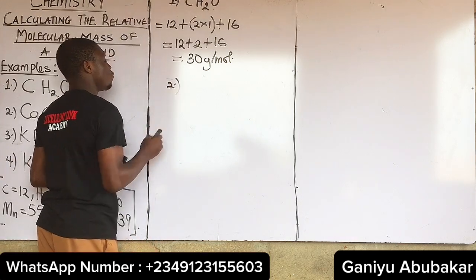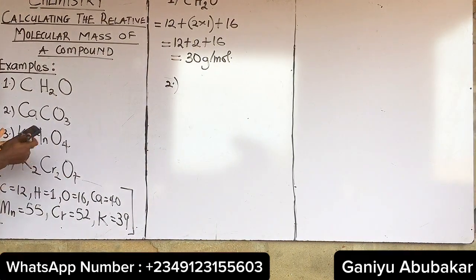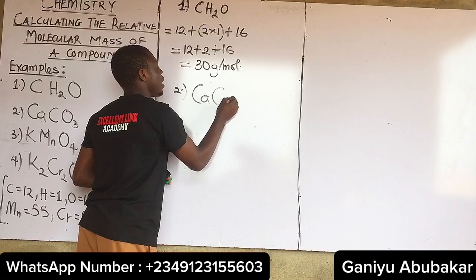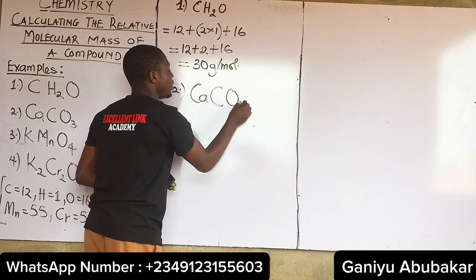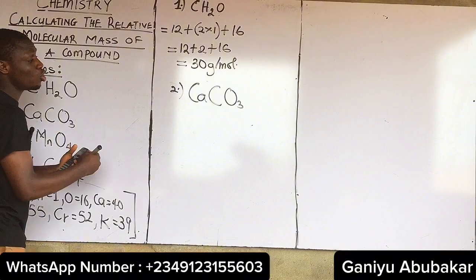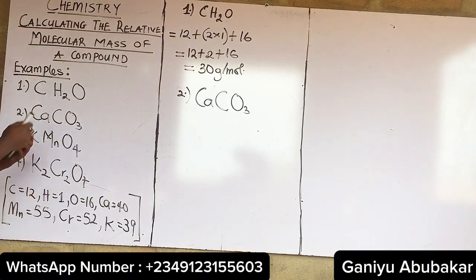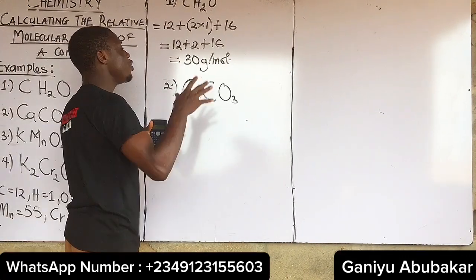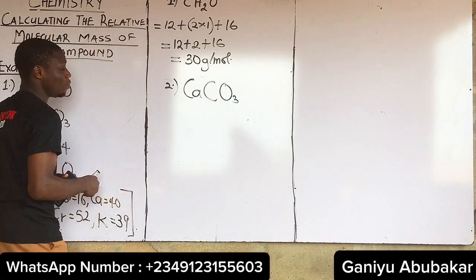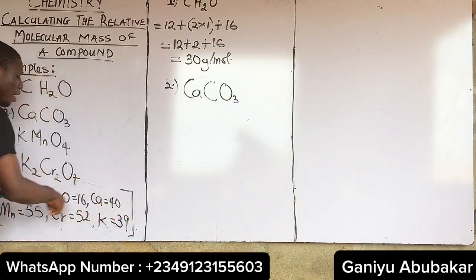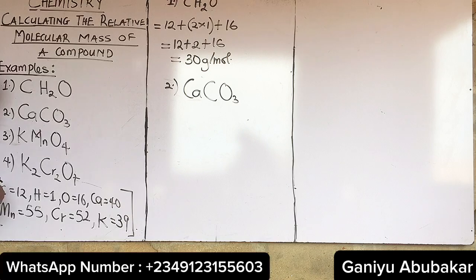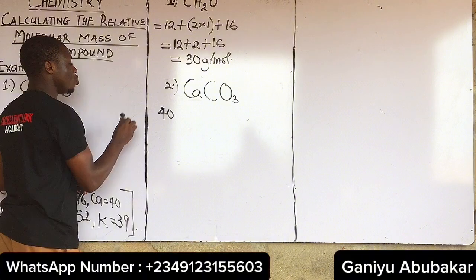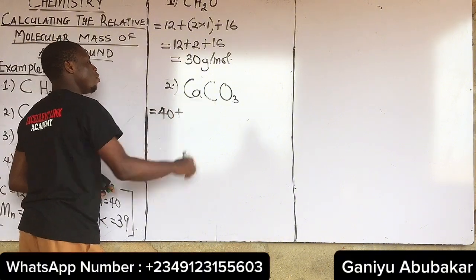Let's do number two to further explain the idea behind calculating relative molecular mass. For number two I have calcium carbonate. Let's calculate the relative molecular mass of calcium carbonate. First, check the atomic mass of calcium (Ca), which is 40. So I have 40 for calcium, plus carbon which is 12.